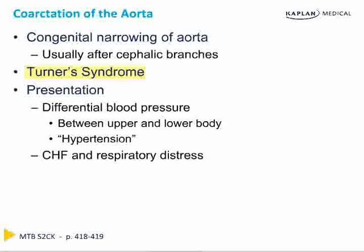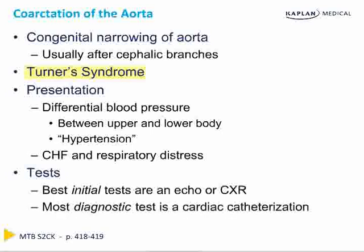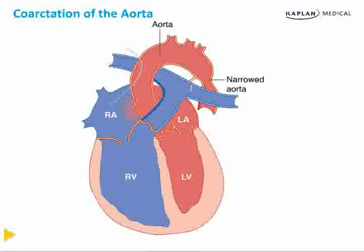Coarctation causes secondary hypertension (not essential hypertension) due to the obstruction. It can lead to congestive heart failure from the increased workload on the left ventricle, resulting in left ventricular hypertrophy and dilatation, and eventually backflow of blood into the pulmonary system causing respiratory distress. The best initial test is an echocardiogram; the most diagnostic test is cardiac catheterization, which directly detects the pressure differential at the point of coarctation. A diagram shows the narrowed aorta at the site of the closed ductus arteriosus, after the three cephalic vessels have branched off — which is why the brain continues to develop normally with an appropriate blood supply.